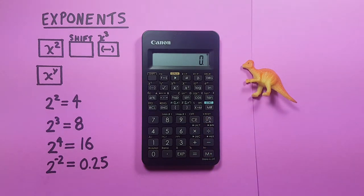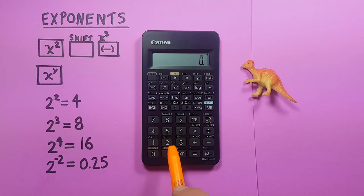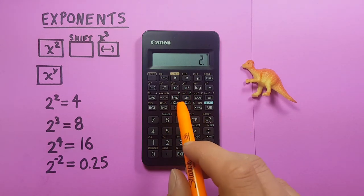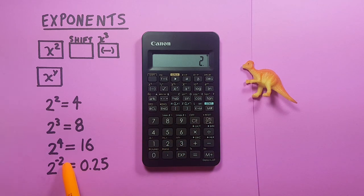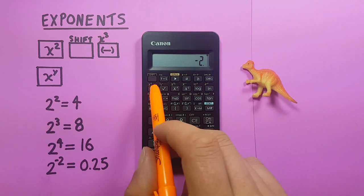What if we wanted to find negative exponents? Well, if we wanted to find 2 to the power of negative 2, place 2 on the screen, and then the x to the y button again, and press 2, because that's our exponent, and then hit the negative.